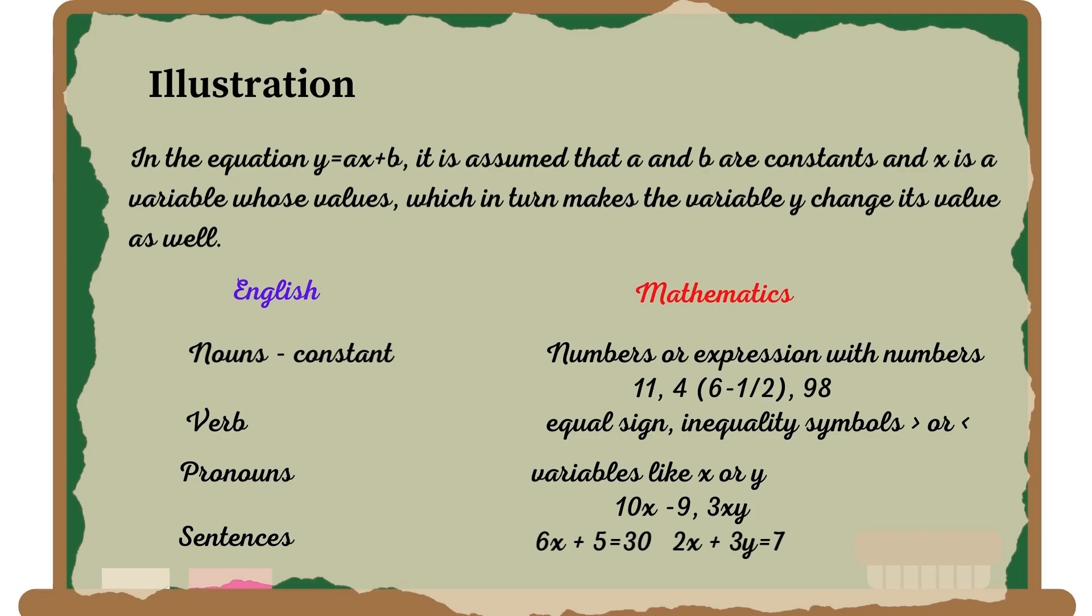Lastly, sentences could be formed by putting together these parts. Like for example, in English, the equivalent in mathematics is 6X plus 5 equals 30, and 2X plus 3Y equals 7.